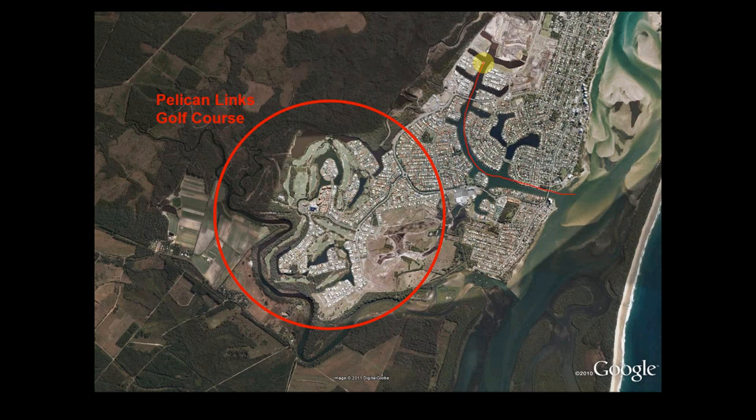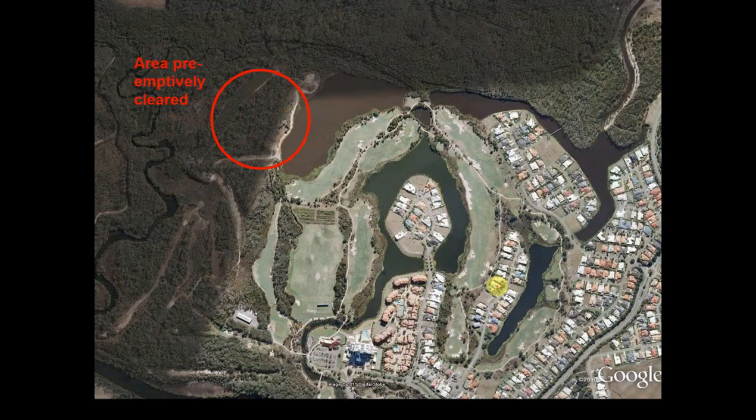This area has had significant canal estates built with ongoing development. Council was trying to stop any further development south of Bell Creek, keeping the area natural or agricultural with fisheries values. Essentially, what was involved was a development in the 1990s that established a residential housing estate with canals and a golf course. Then in the mid-2000s, an area was preemptively cleared.